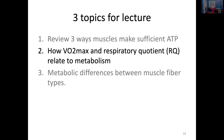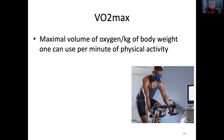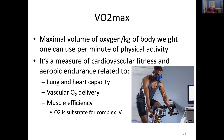Topic two: how do VO2 max and respiratory quotient relate to metabolism? VO2 max is defined as the maximum volume of oxygen per kilogram of body weight that one can use per minute of physical activity. It is a measure of cardiovascular fitness and aerobic endurance, related to lung and heart capacity, vascular oxygen delivery, and muscle efficiency. Muscle efficiency mostly relates to mitochondria — how effective they are and how well they utilize oxygen as a substrate for complex V.